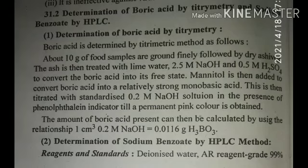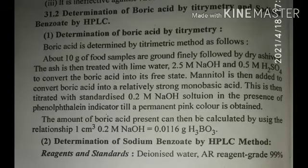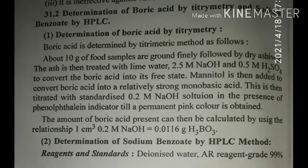Here we analyze boric acid by the titrimetric method. For this, we take about 10 grams of food sample, which is ground finely, followed by dry ashing. We grind the food sample into a powder, then heat it to form ash, and then analyze the ash.